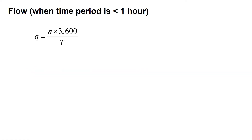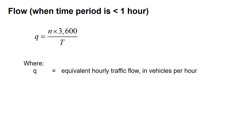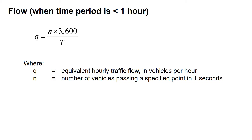We can also look at the flow when the time period is less than one hour. In that case, Q — the equivalent hourly traffic flow in vehicles per hour — is equal to N times 3600 divided by T, where N is the number of vehicles passing a specified point and T is the duration of the time interval in seconds. The 3600 is the conversion factor: 60 seconds per minute times 60 minutes per hour.